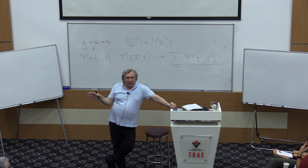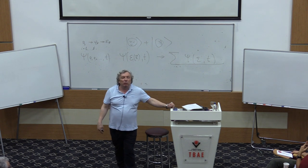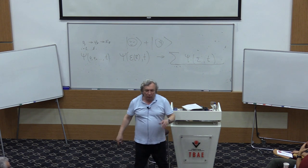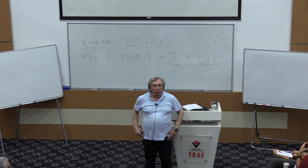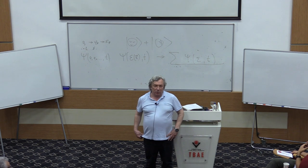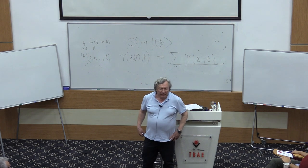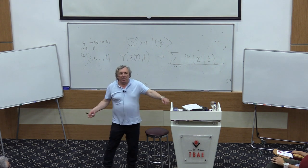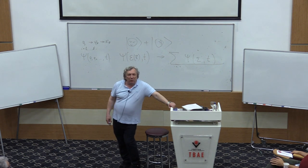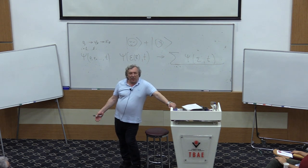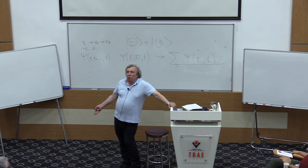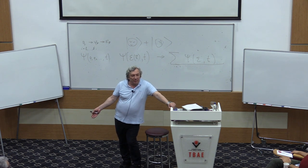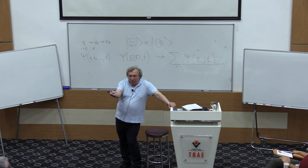Schrödinger wrote that if he had known what the consequences of quantum mechanics would be, he would never have written his equation. Heisenberg wrote that instead of describing an objective world, what we are doing is describing our knowledge about this world. Why were they writing all this?